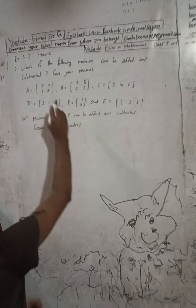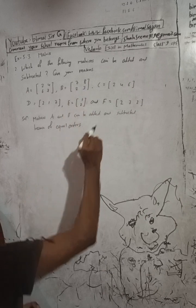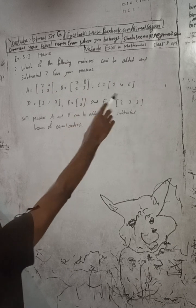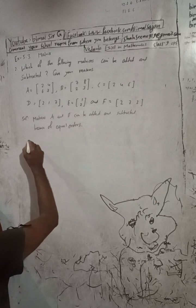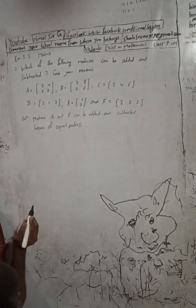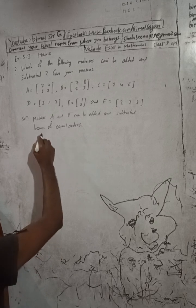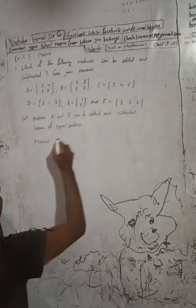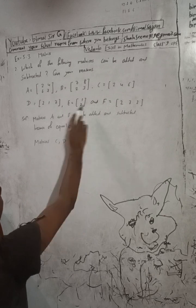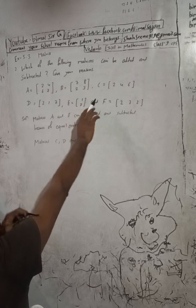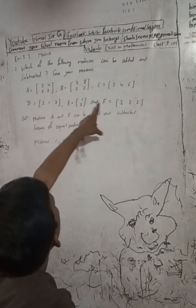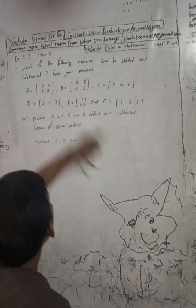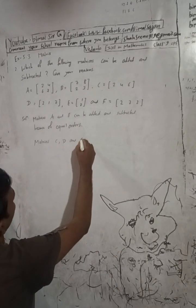Here, 2×2 and this is also 2×2. Now for matrix C — looking at matrices C, D, and F — matrix E is not included because it has order 2×1, but there is no other matrix with the same order. That's why matrices C, D, and F can be considered together.